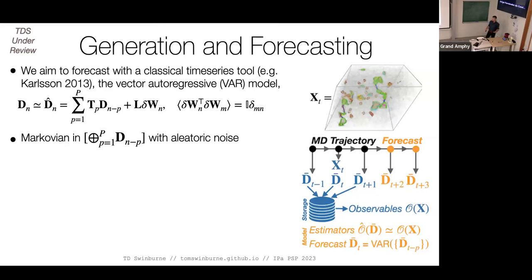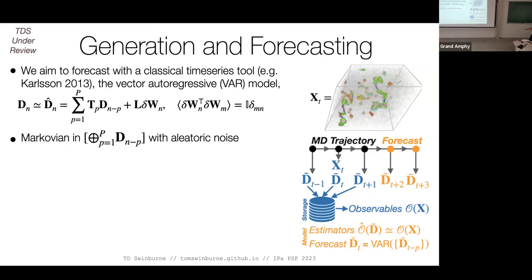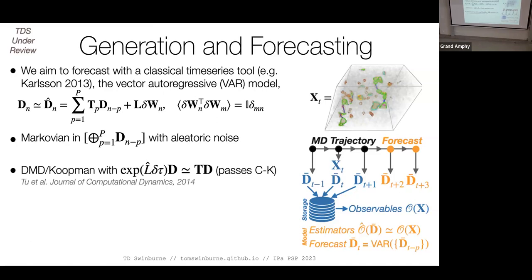Now, I want to generate trajectories and predict the future of these trajectories. Using a pretty classical time series idea — a vector autoregressive model — the next time step is a weighted average of previous time steps plus some noise. This is like a generic Koopman operator, and you can check a Chapman-Kolmogorov test on this stacked history: the stacked object is Markovian and it passes the test.